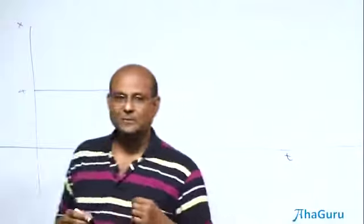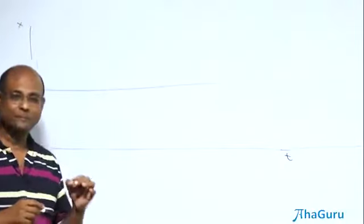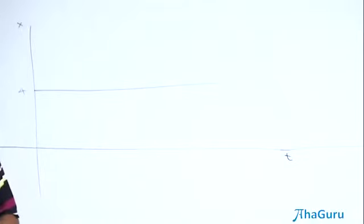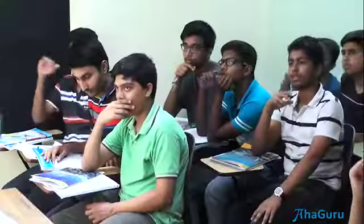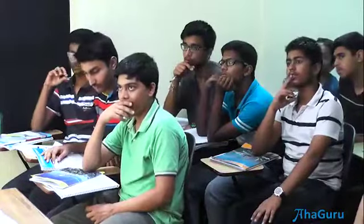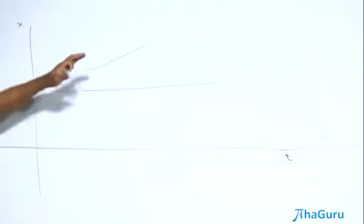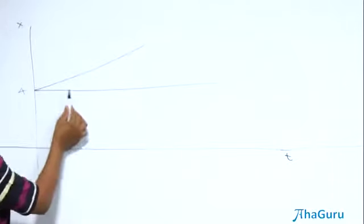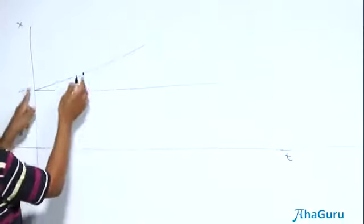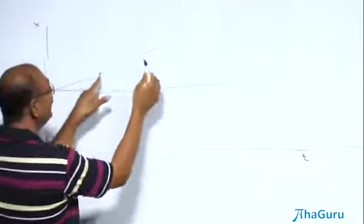Now suppose this object was moving but with uniform velocity. How will the graph look? Now maybe it looks like this. It has to look like a straight line. Why?